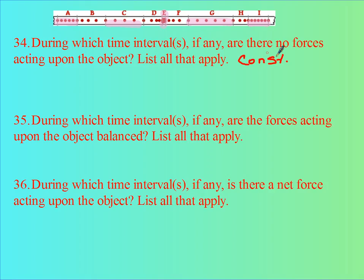So, where are there no objects? Where is the velocity constant? That would be A, C, E, G, and I.